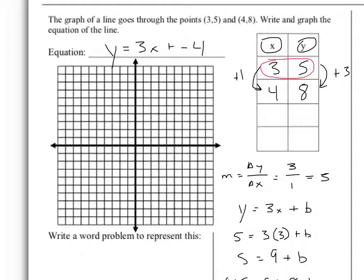You can really graph this any way you want. I'm going to go ahead and graph the two points over here. 3, 5, because this is actually going to help me check my work. Over 3, up 5. And 4, 8.